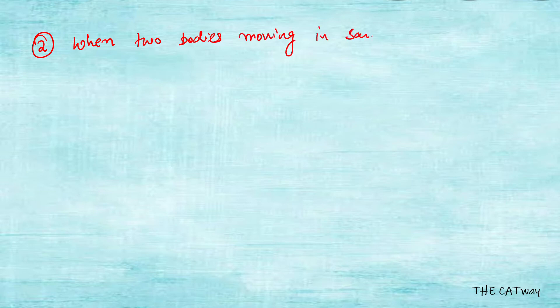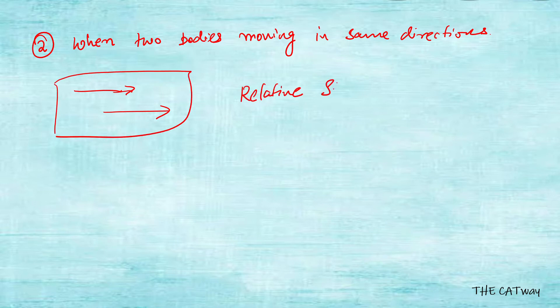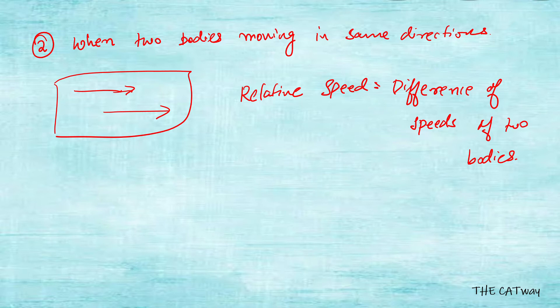The second case is when two bodies are moving in the same direction — you can call it the case of overtaking. One car is moving in a direction and the other car is also moving in the same direction. In this case, the relative speed is going to be the difference of the speeds of the two bodies.